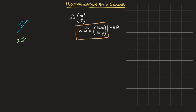So if I try and draw that, vector 2u would look something like this — that's the vector which is parallel to u, is 2 times longer, and points in the same direction. This first example shows us that when we multiply a vector by a number, it stretches the vector. In this case, it stretched it by a scale factor of 2.